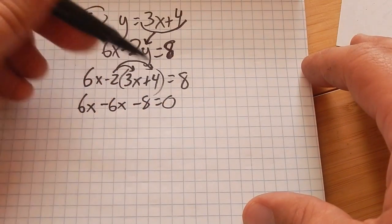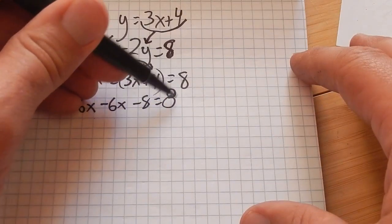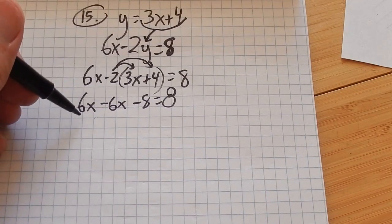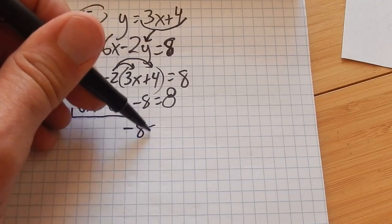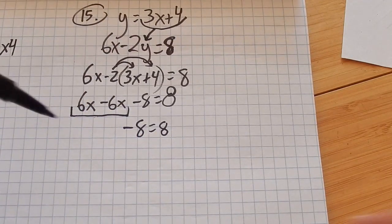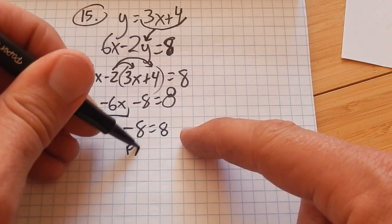The reason I want to substitute that in is now I have an equation that only has one variable in it. I can solve that. So negative 2 times 3x, negative 2 times 4. I'm going to do some distributing here. Negative 2 times 3x is negative 6x. Negative 2 times 4 is negative 8.